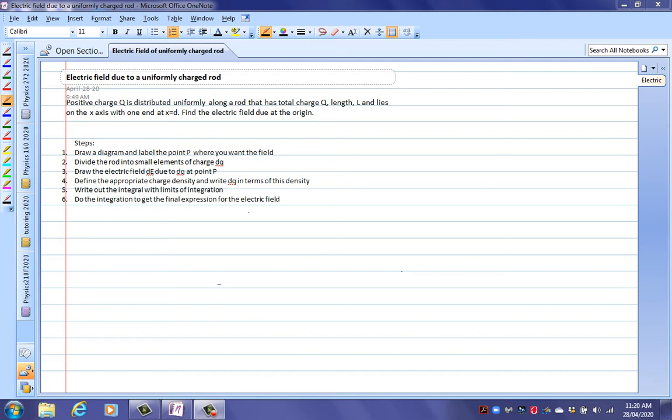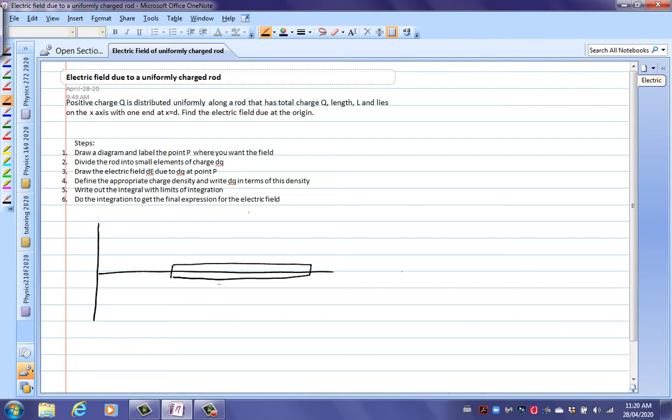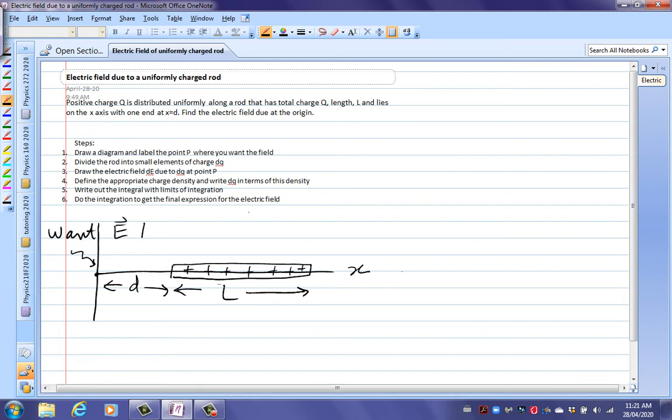For this particular one, we're going to start with a rod that lies on the x-axis, with one end a distance d from the origin. The length of the rod is L, this is our x-axis, and the rod is uniformly charged along its length. So there's our diagram. The point P where we want the field is here, at the origin. And so I like to make that really clear, that what we're after here is that we want E here.